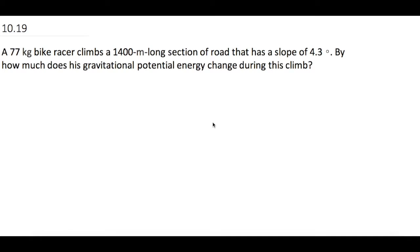A 77-kilogram bike racer climbs a 1,400-meter-long section of road that has a slope of 4.3 degrees. By how much does his gravitational potential energy change during this climb?